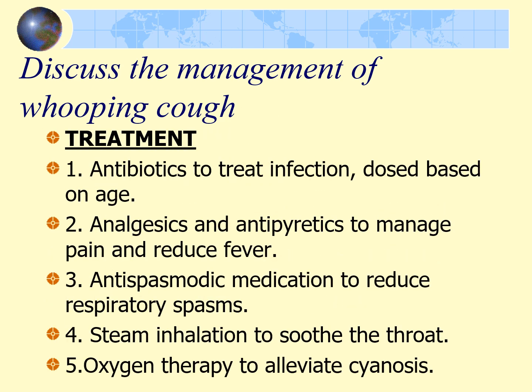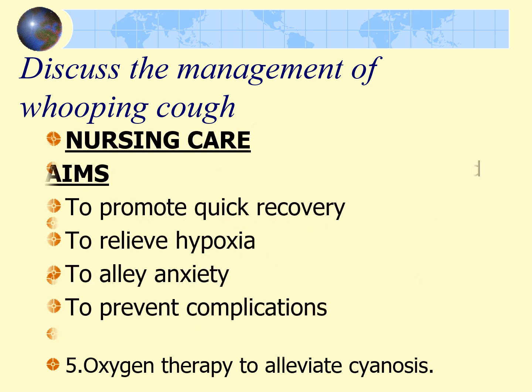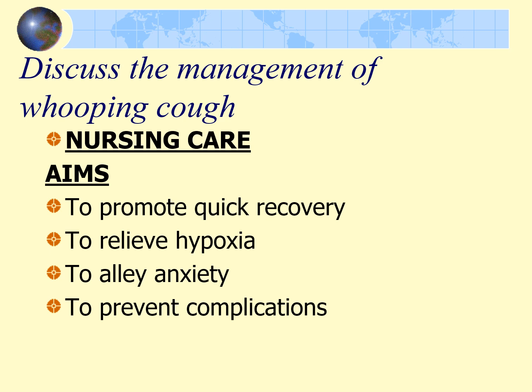The treatment plan includes administering antibiotics such as erythromycin, with doses ranging from a quarter to one mega unit based on the child's age, given four times daily for five days. For pain and fever management, analgesics such as paracetamol, given 50 to 200 milligrams three times daily, are recommended. To reduce respiratory spasms, a single dose of propanthine 2.5 milligrams may be given. Steam inhalation is advised to soothe the throat, and oxygen therapy at two to three liters per minute can be used to relieve cyanosis.